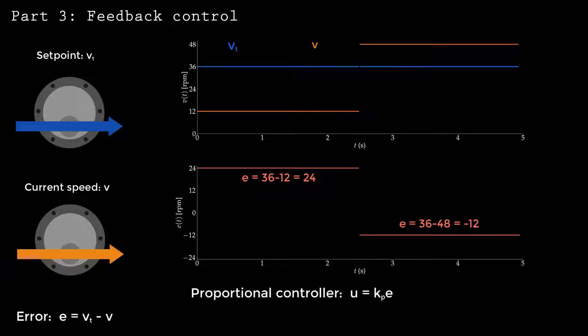In this example, I set Kp equal to 0.5. This means the control signal U will provide 12 volts to speed up the motor in the first case. In the second case, negative 6 volts will be applied, slowing the motor down.